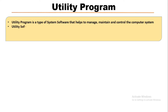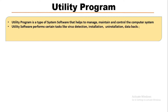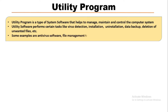Utility programs perform certain tasks like virus detection, installation, uninstallation, data backup, and deletion of unwanted files. Some common examples are antivirus software, file management tools, compression tools, and disk management tools.